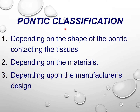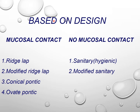Coming to pontic classification, it can be classified according to three different methods: depending on the shape of the pontic contacting the tissue, depending on the materials, and depending on the manufacturer's design. Based on design, it can be mucosal contact or no mucosal contact. Mucosal contact types include ridge lap, modified ridge lap, conical, and ovate pontic. No mucosal contact includes sanitary or hygienic and modified sanitary.